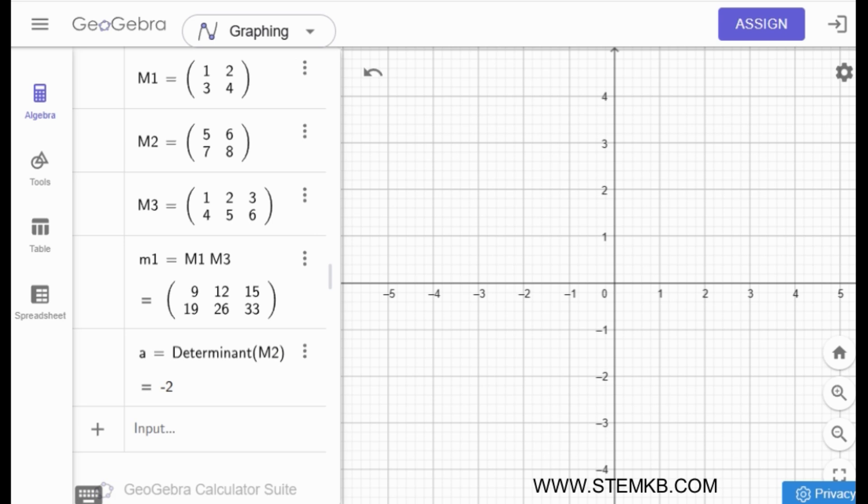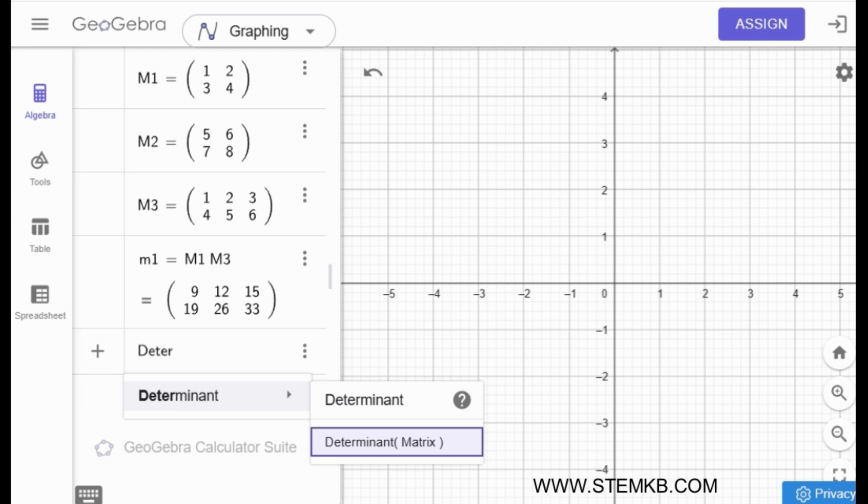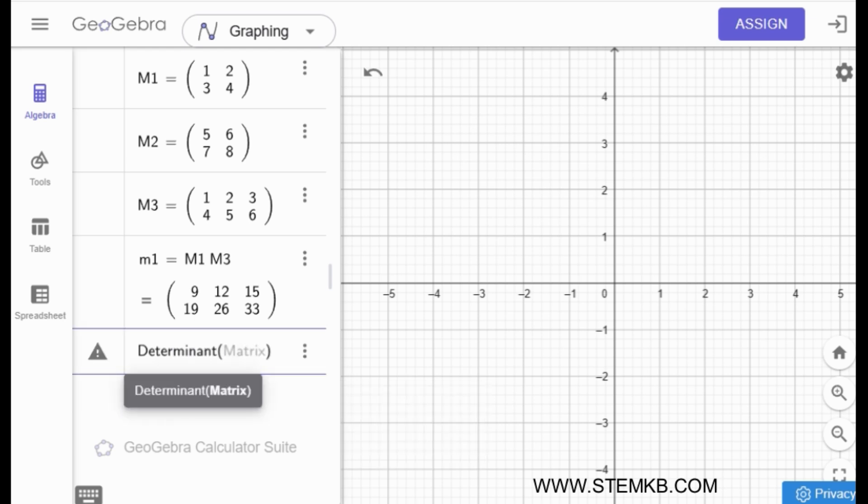Exactly. Earlier, you mentioned that matrices are used for all these interesting things in GeoGebra. Can you give us a little preview of what we can do with them? Sure. Imagine you want to rotate a shape or flip it over a line. Those are transformations, and you can easily do them with matrices. They're like a super powerful tool for manipulating things in that virtual space. Wow, that's really cool.